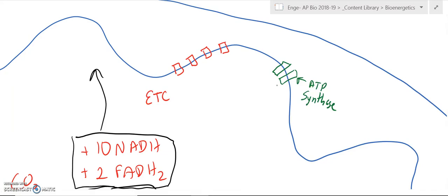How does it work? Well, the first thing that we need is this entire process needs oxygen. So, oxygen comes in at the end of the electron transport chain.